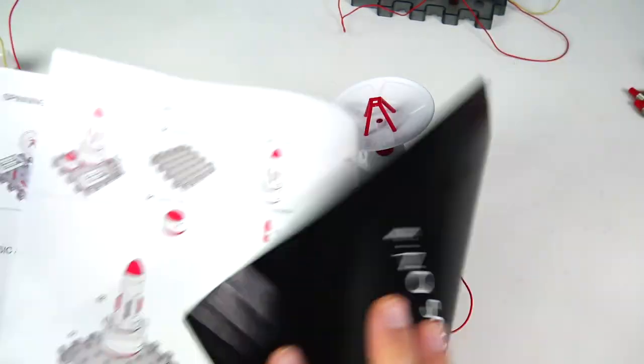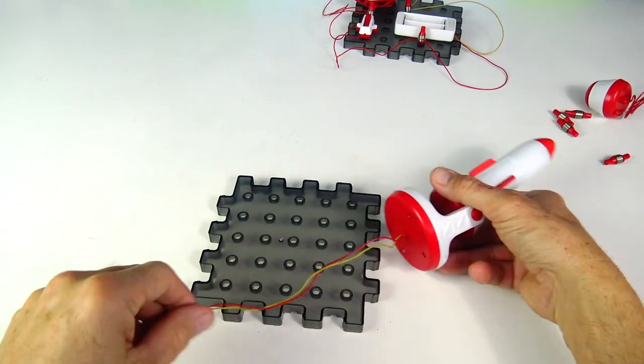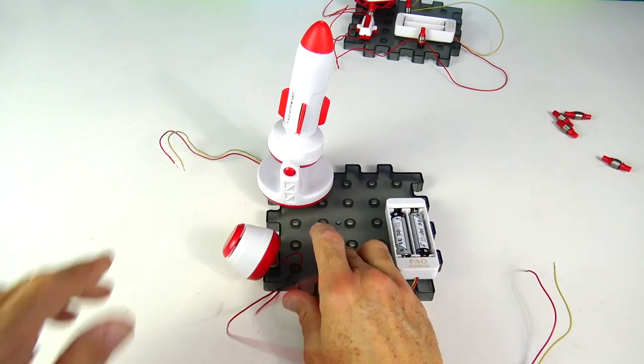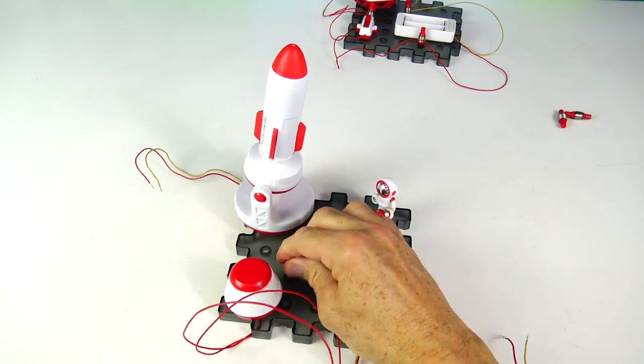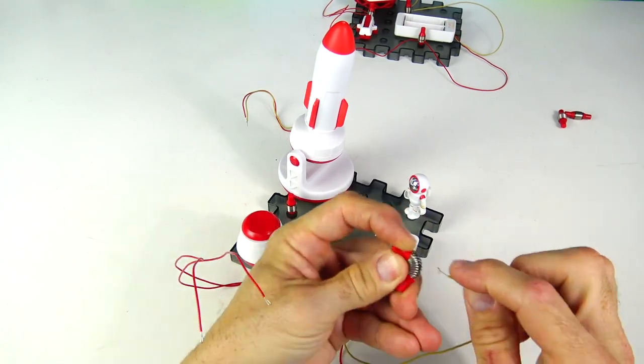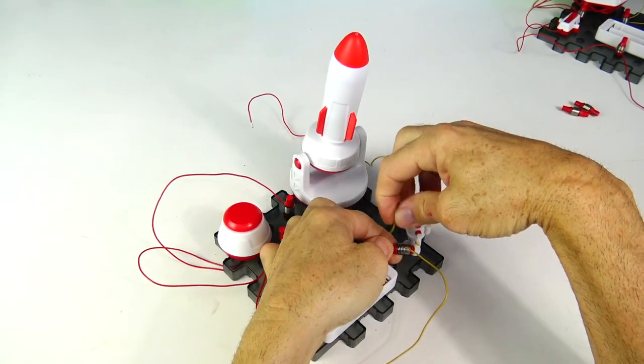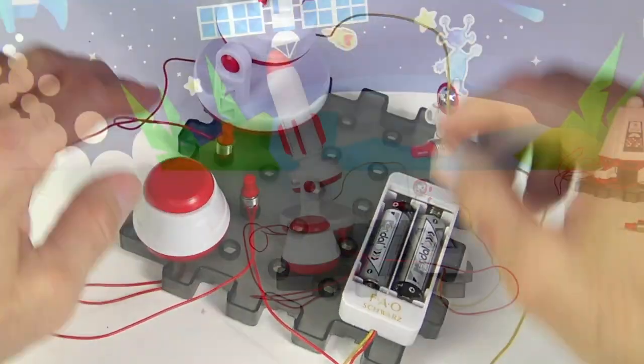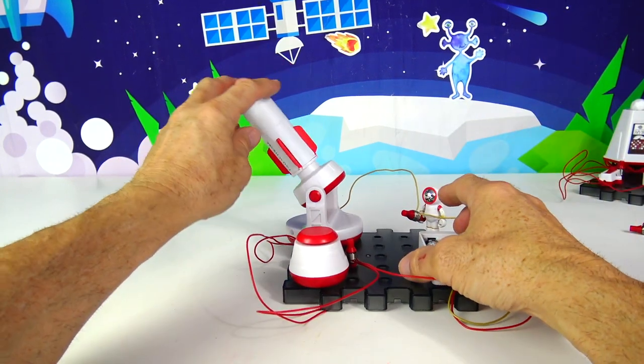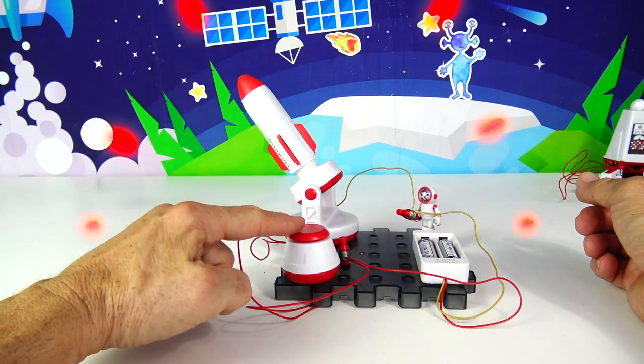Alright, now we need to connect all the wires. Alright guys. So we're all set for launch. We don't have an off and on switch. We have a launch button this time. So the rocket, you can tilt it whichever way you want. And all you need to do now is just press this button and we launch.